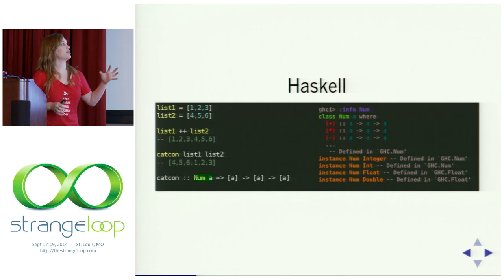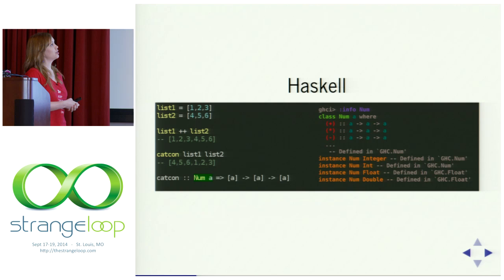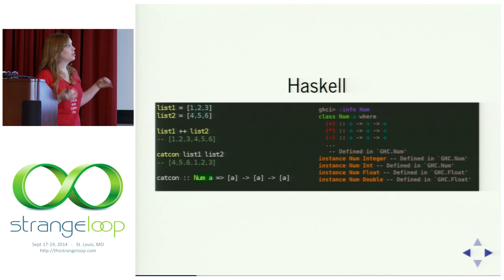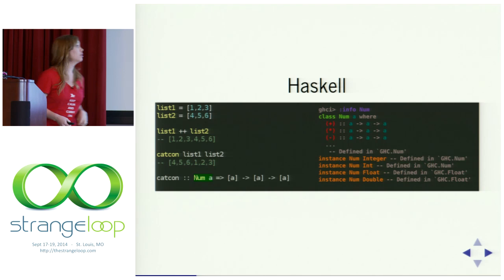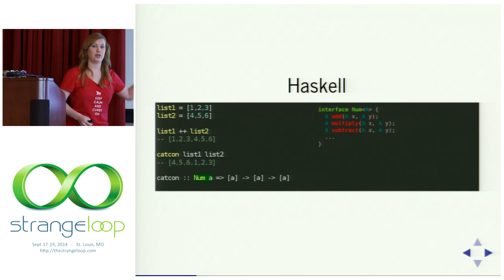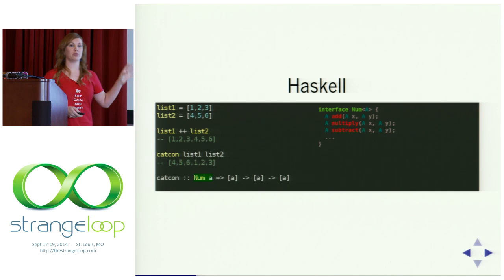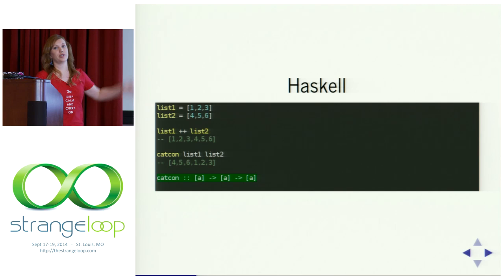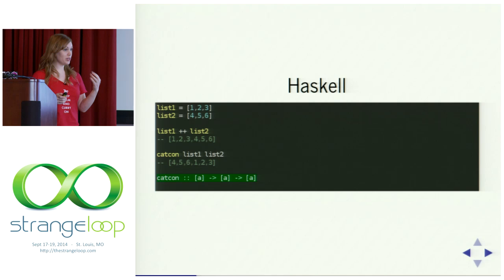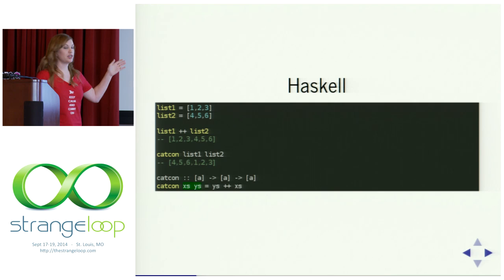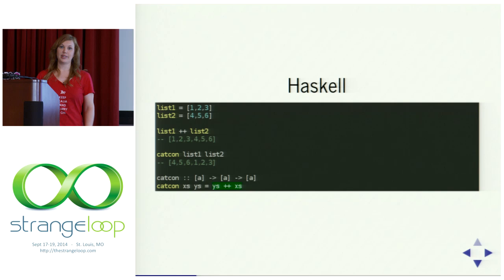We can say we take any 'a' where 'a' is a member of the Num type class, which defines particular behavior those values must have. If we jump into GHCI — the Haskell REPL — and ask for info about Num, it tells us it's a type class with operations like addition and multiplication, and instances such as Int and Float. We can also make it even more general — just any list of 'a' — by removing the type class constraint. That's the whirlwind tour of Haskell syntax.